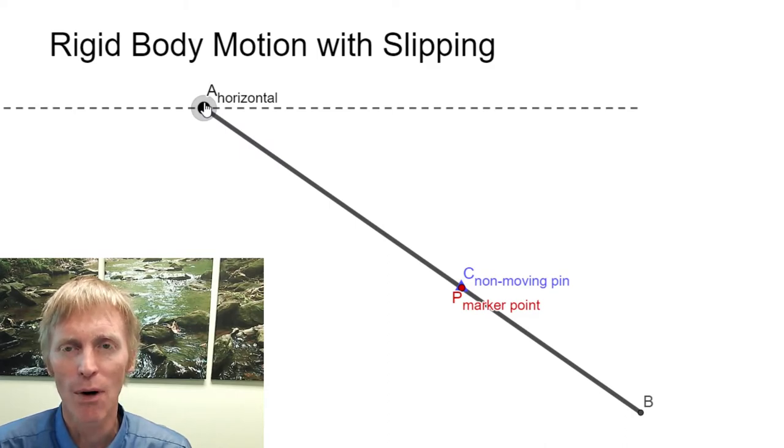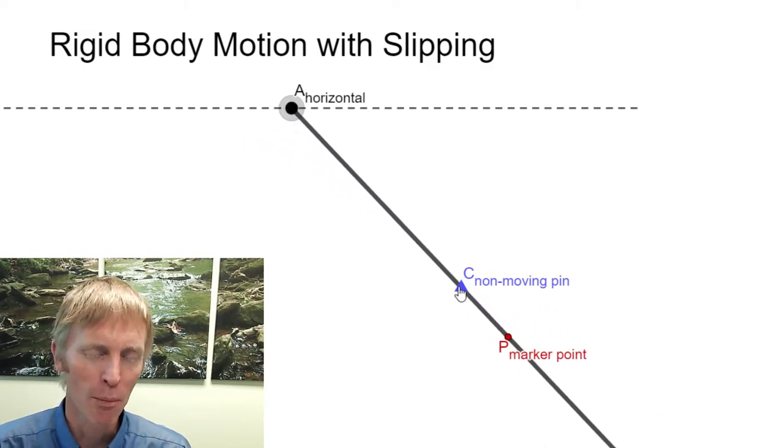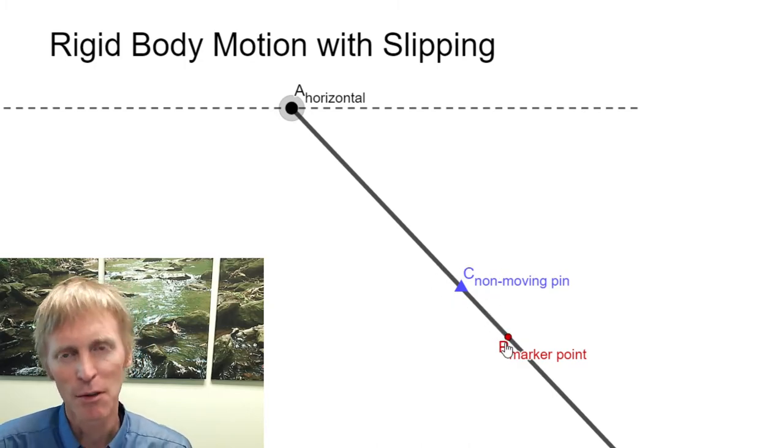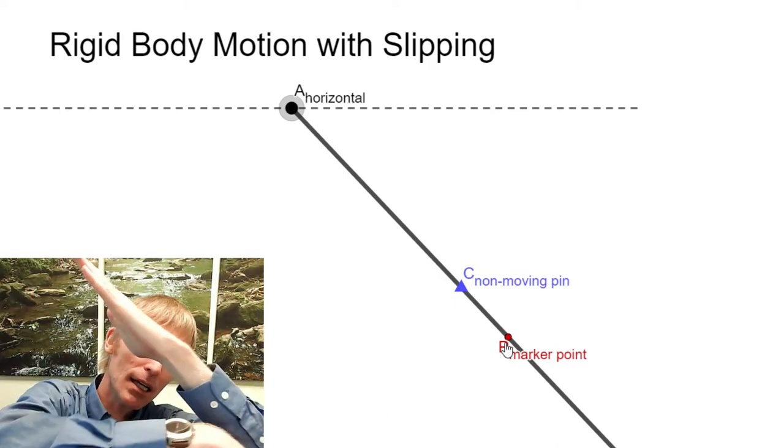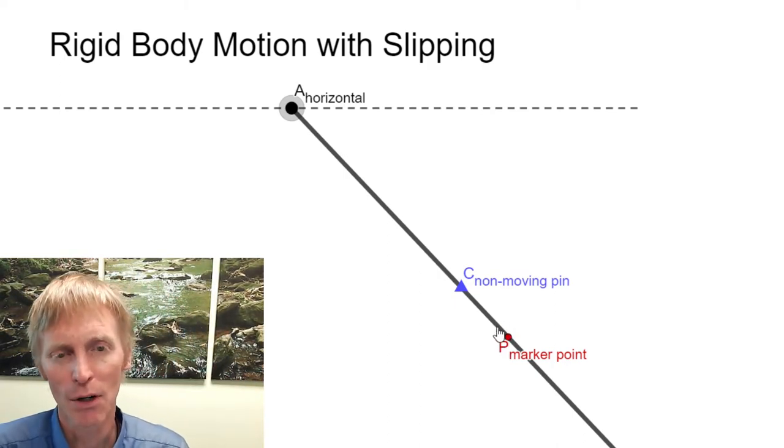Again, as we move A to the right, P will depart here, meaning that our velocity of C relative to P goes up towards point A. The velocity of P relative to C down toward point B, depending on how your equation is written.